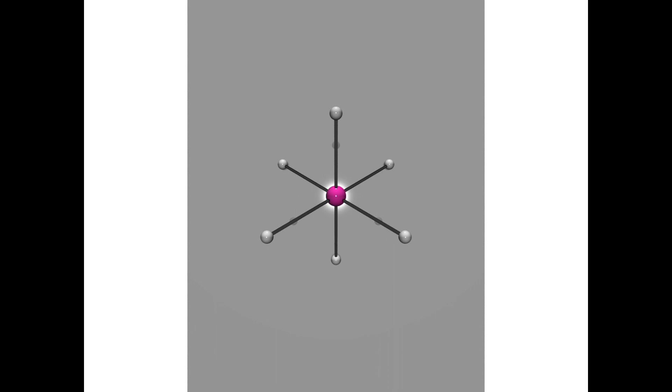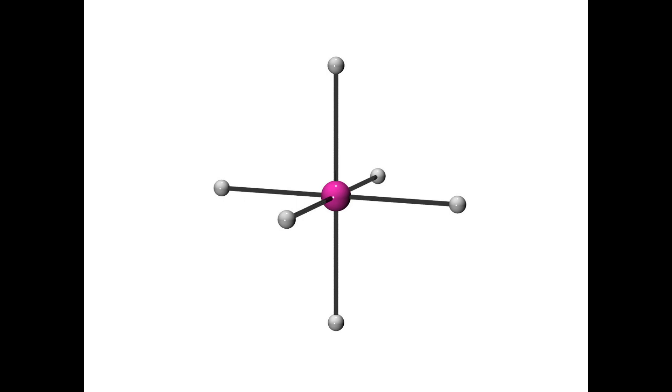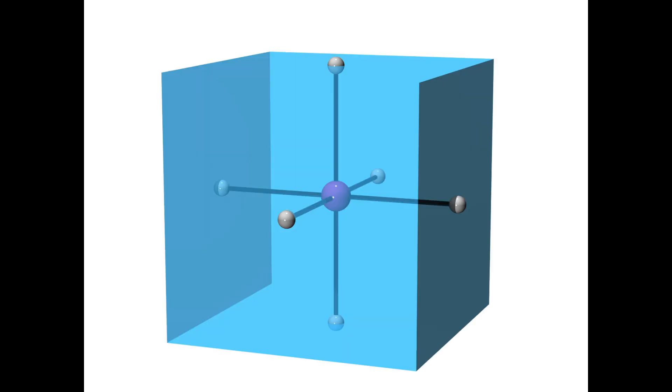The next challenge is to identify all four unique C3 axes. To make this easier, I'm going to put our octahedral molecule inside an imaginary cube. The central atom is at the center of the cube, and each of the coordinated atoms occupies a face of the cube.